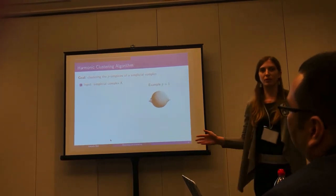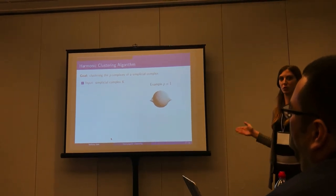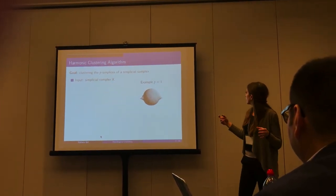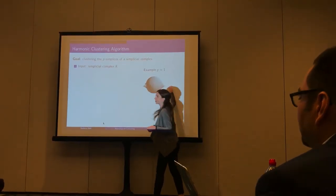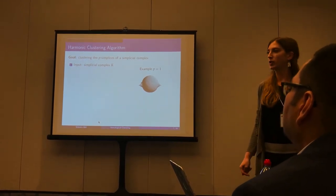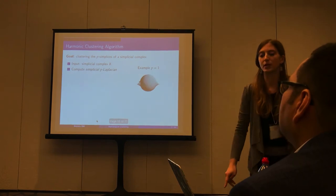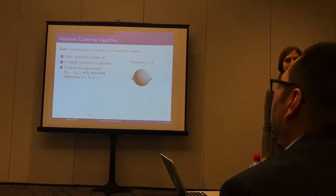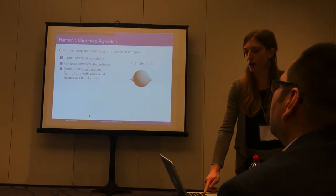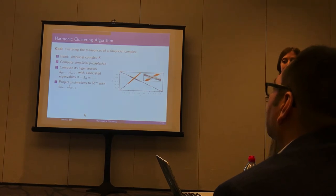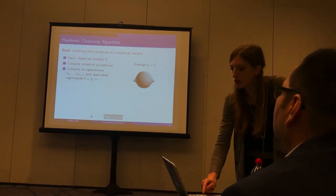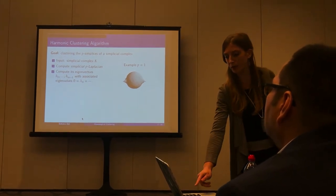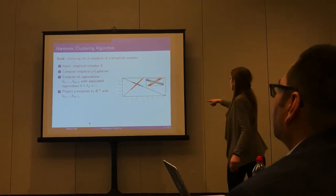The input is a general simplicial complex in which we fix p, the dimension of the simplices we want to cluster. For example, on the right we can see a simplicial complex given by a triangulation of a sphere with two one-cavities attached, and we want to cluster the edges. One computes the p-Laplacian for the fixed dimension p, then computes the eigenvectors in its kernel and uses them to project the p-simplices to R^m. In this example, the one-Laplacian has two eigenvectors in its kernel, used to project the edges to R^2.